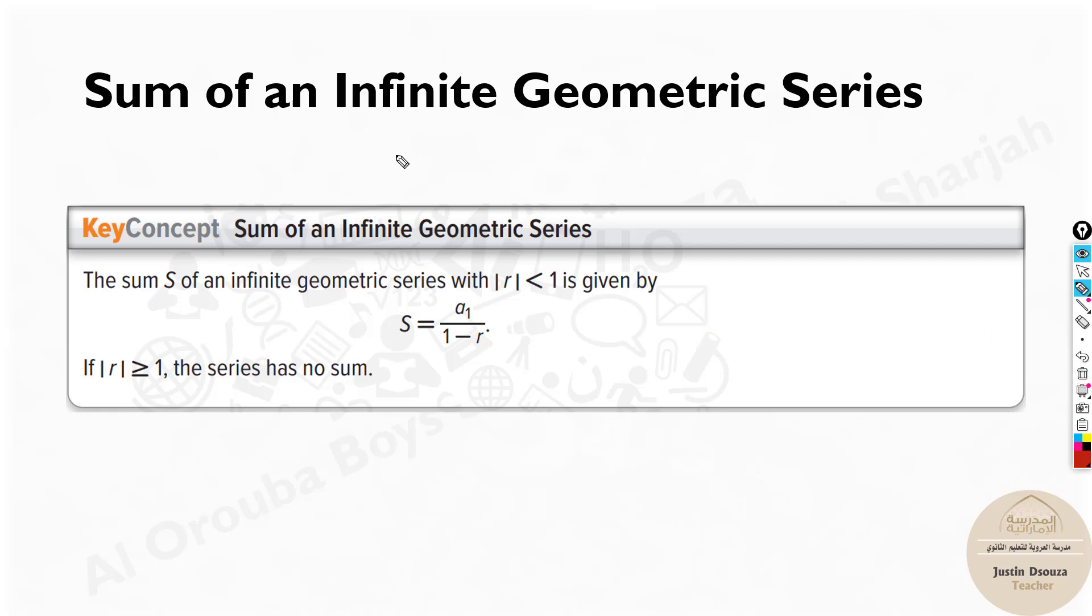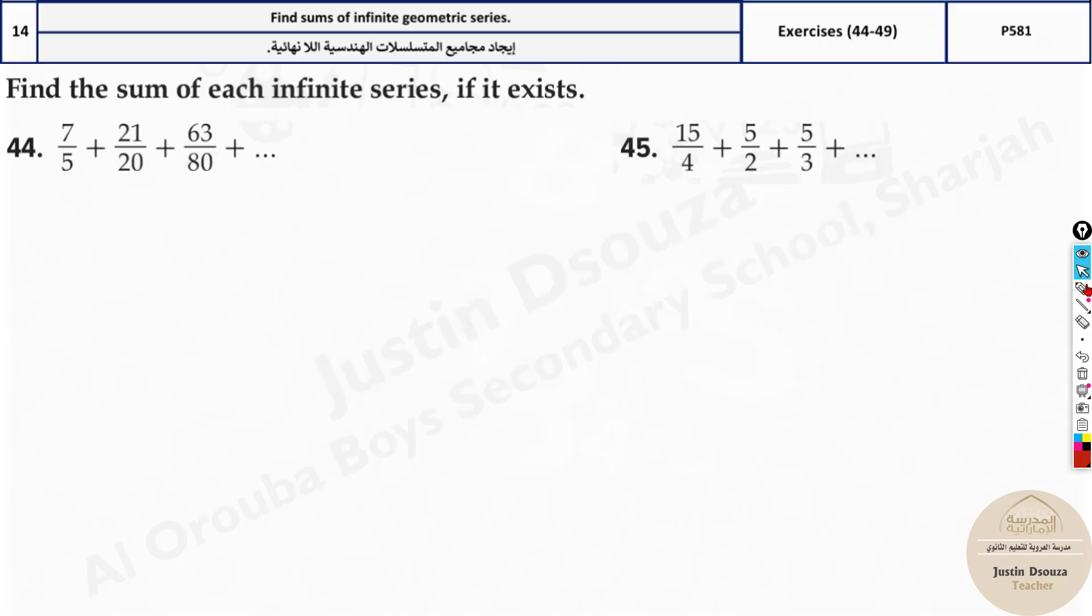Whereas if it goes less, say 0.5, 0.25, 0.125, and then you can add all the sums. So we will look into the problems here. First step, you need to find r for all the terms like this, just find r.